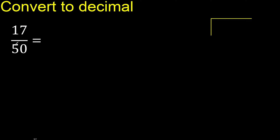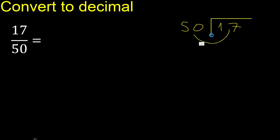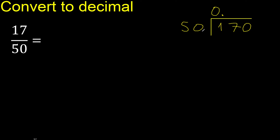17 divided by 50. 17 is less, therefore always complete with 0. Here: 0 point. 170 is not less than 50.